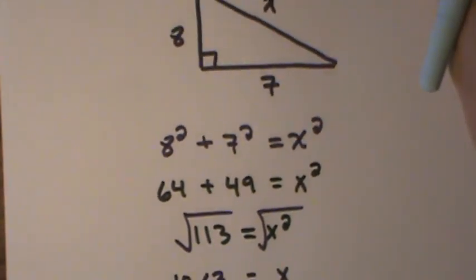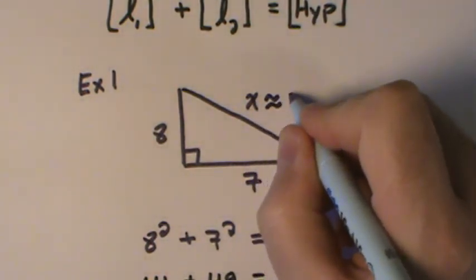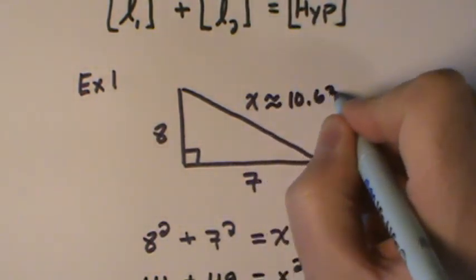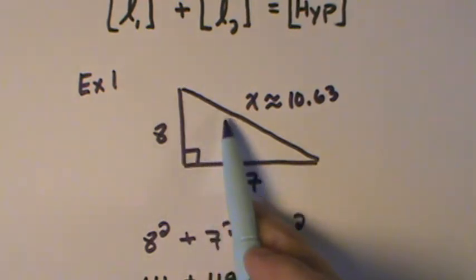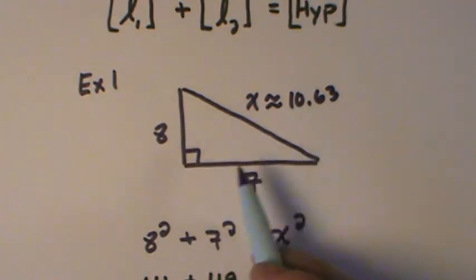As a quick check, when I go back to my triangle, I say this is approximately 10.63. I notice that this is the longest side of the triangle. It has the largest value, so it makes sense.